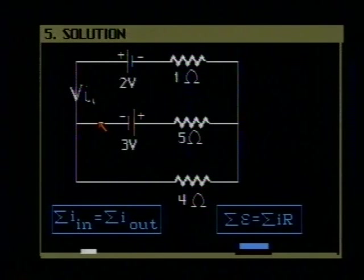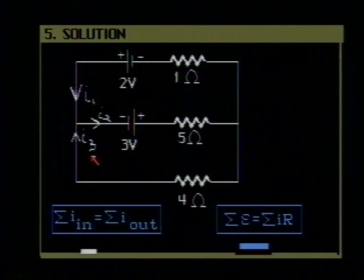Let's let the current in this branch be I2, and the current here be I3. Remember, we're simply assuming a direction of these currents. These directions may be wrong. If they are, the values for the current will come out to be negative.